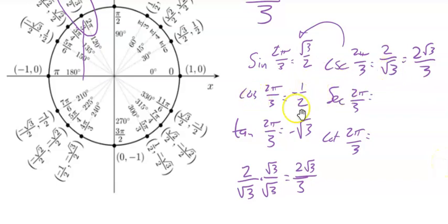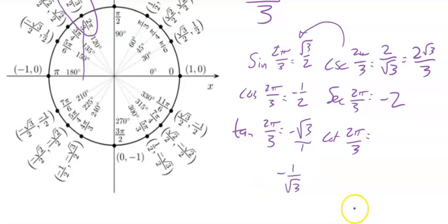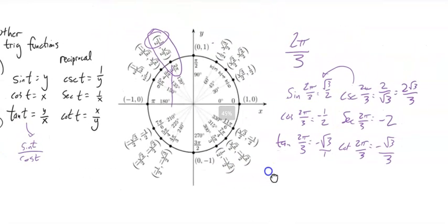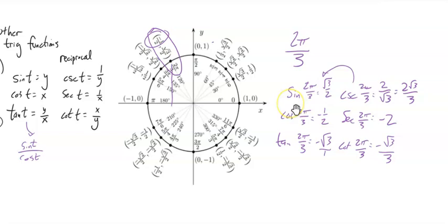Secant is the reciprocal of cosine, negative 1 half. Flip that over, negative 2. Tangent, negative √3 over 1. So when I flip that, it's negative 1 over √3. Multiply by this version of 1, it gives me negative √3 over 3. And there I found all 6 values of all 6 trig functions of 2π over 3.